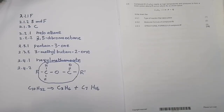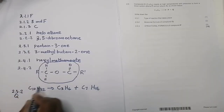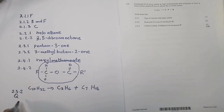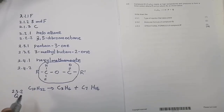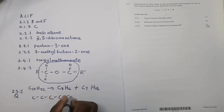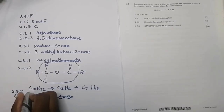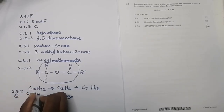They say write down the molecular formula of compound Q. For 2.5.1 the answer is thermal cracking. For 2.5.2, compound Q is C7H16.